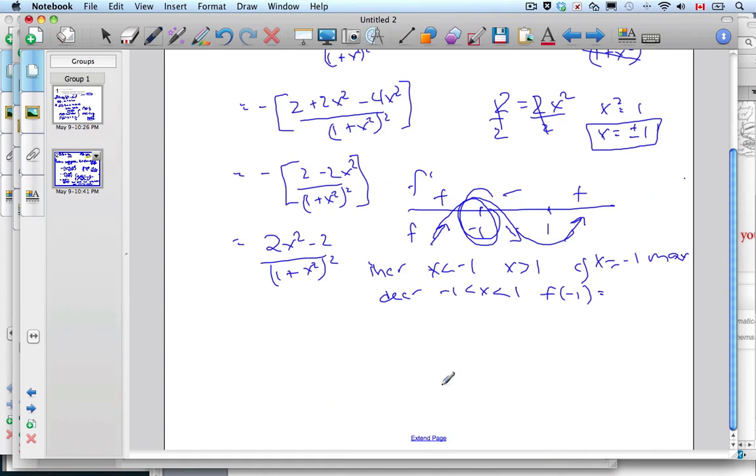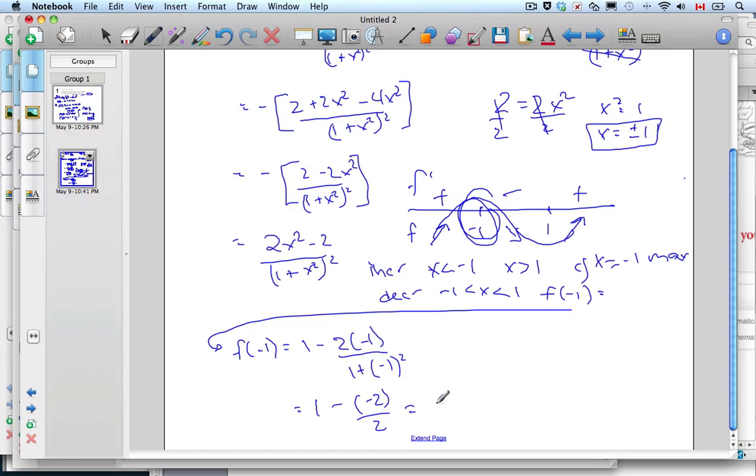Plugging into the original function, f(-1) = (1 - 2(-1))/(1 + (-1)²), which is (1 - (-2)) over (1 + 1 is 2), which is 1 plus 1, which is 2. So the maximum is at (-1, 2).